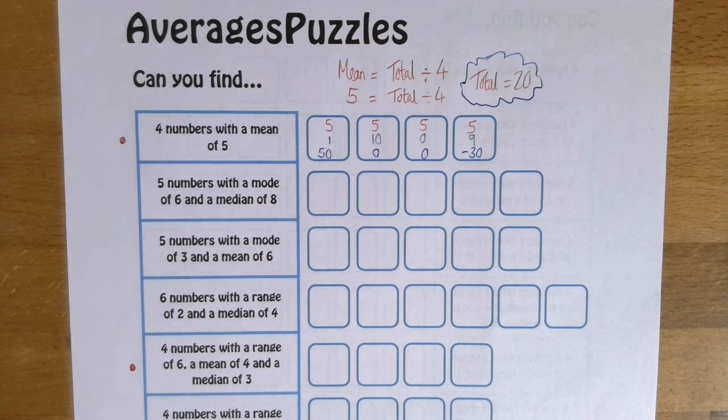And the second question I want to go through is a similar one. So here I've got four numbers with a range of six. Now that means the difference between the biggest and the smallest number needs to be six. Big take away small has to be six. A mean of four and a median of three.